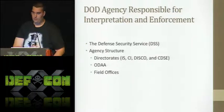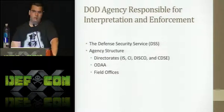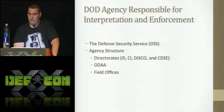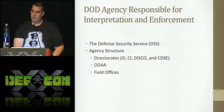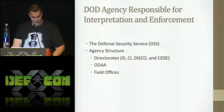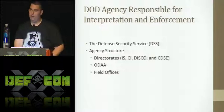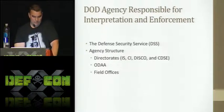CI — Counterintelligence — is just how it sounds. If a defense contractor gets hacked or if there's a foreign agency trying to target that company, the counterintelligence group goes out and interviews them. I have some slides at the end covering information aggregated from counterintelligence. Industrial security is the primary portion of the agency and they do the inspections of contractors. ODAA is a subgroup of industrial security — the Office of Designated Approval Authority — and these are the guys that handle computer systems that process classified information.